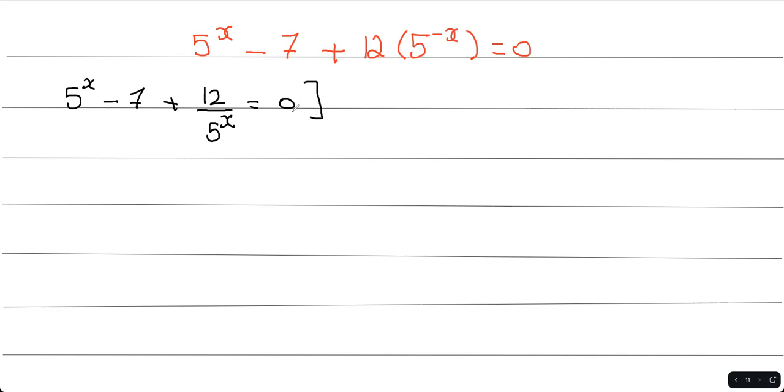At this stage, I'm going to multiply everything by 5 to the power of x so that I could get rid of 5 to the x on the bottom here.